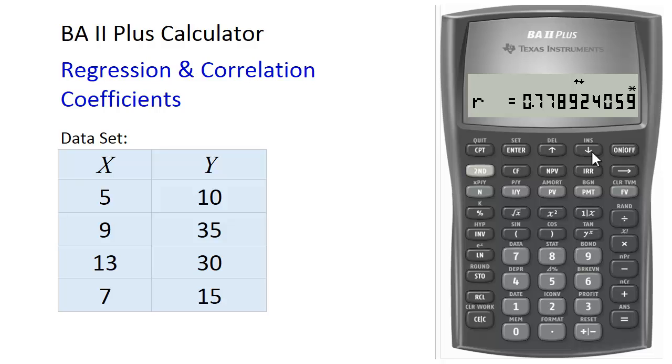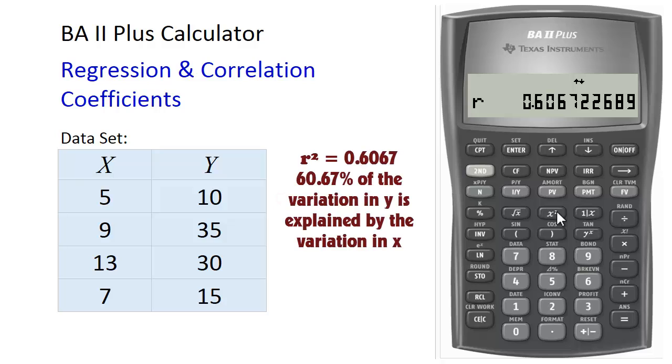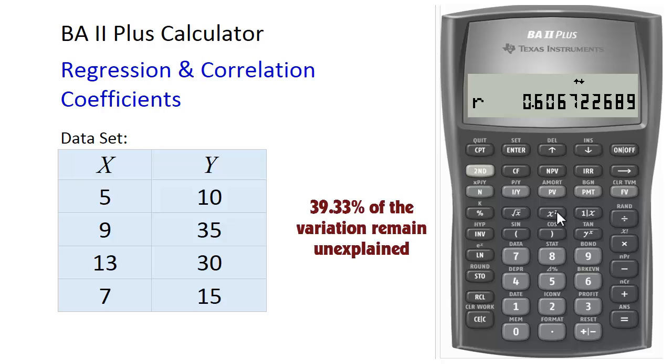To obtain the coefficient of determination, r squared, square the r value. So squaring the r value gives us 0.6067, which is the coefficient of determination. This means that 60.67% of the variation in Y is explained by the variation in X, and about 39.3% is not explained.